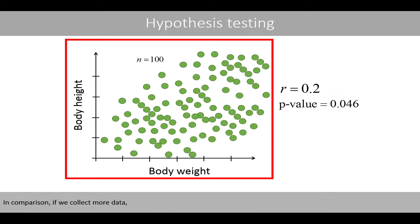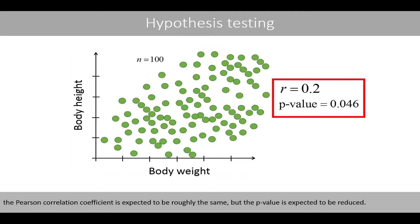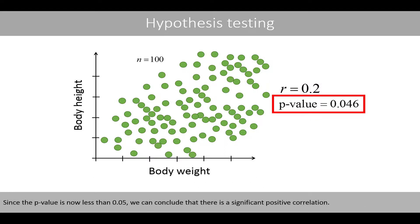In comparison, if we collect more data, the Pearson correlation coefficient is expected to be roughly the same, but the p-value is expected to be reduced. Since the p-value is now less than 0.05, we can conclude that there is a significant positive correlation.